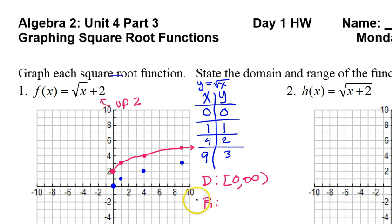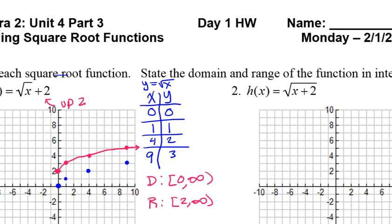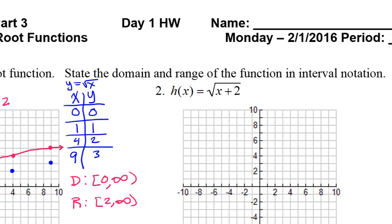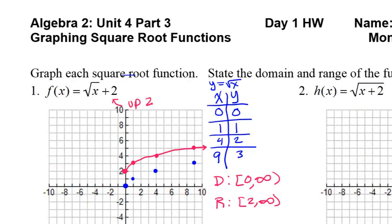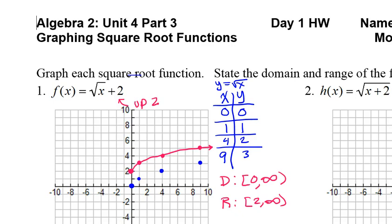The domain is like x values left to right. This goes from zero to infinity. And then the range, which goes from bottom to top. Haley, talk to me about the range. So it's two to infinity? Sure. The range starts off at two and then it goes to infinity. Is there anything else I'm asking for? Graph it, state the domain and range. All right. Any questions about number one?